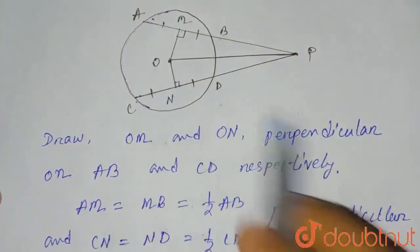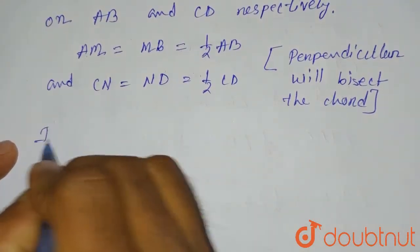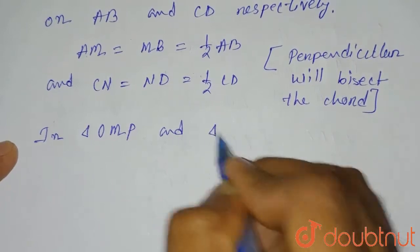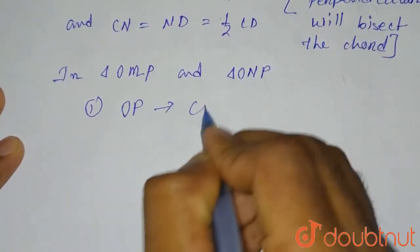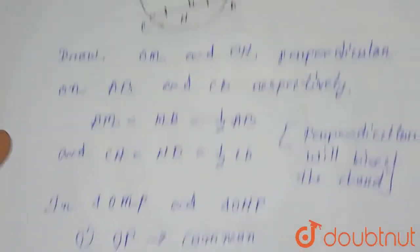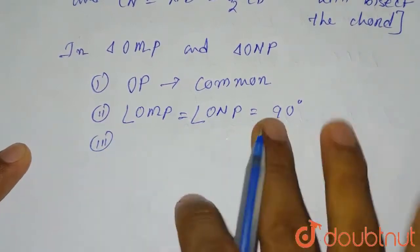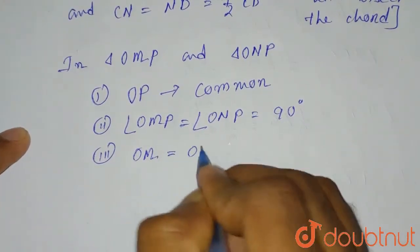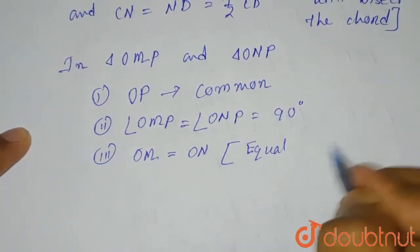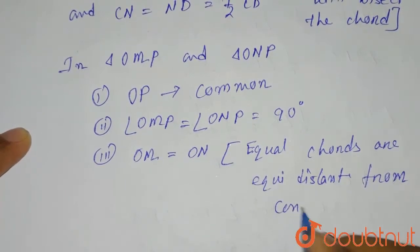Now consider triangles OMP and ONP. First, OP is common. Second, angle OMP equals angle ONP equals 90 degrees. Third, OM equals ON, because equal chords are equidistant from the center. So the distance OM and ON will be equal.